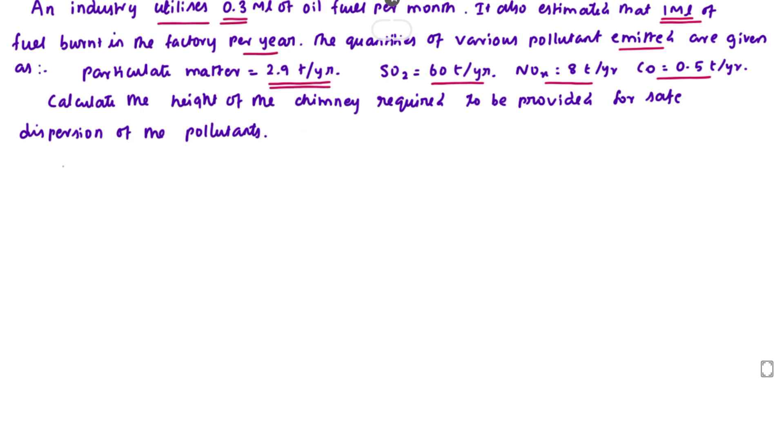Now we can find out the height of the chimney. First thing is for particulate matter. The height of chimney formula is h equal to 74 times qp power 0.27, where qp is emission of particulate matter per ton per hour. The quantity of particulate matter qp equal to 2.9 into the burnt oil, so that is 0.3 into...